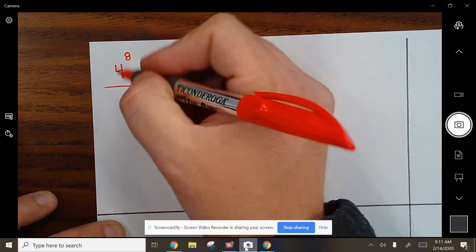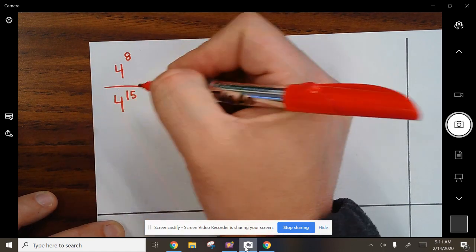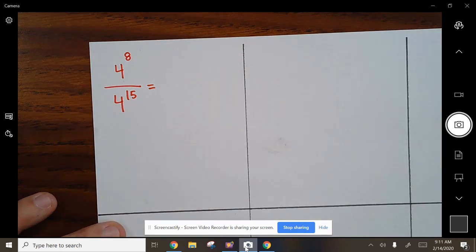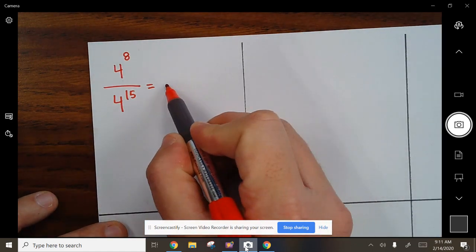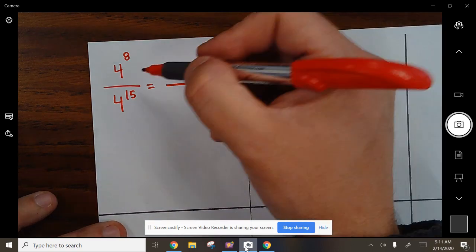So 4 to the 8th over 4 to the 15th. I'm going to encourage you to really show all of the work so you know what's going on. The first thing you're going to realize is there's a battle going on. It's division, so your answer will be in subtraction. You're going to subtract here.